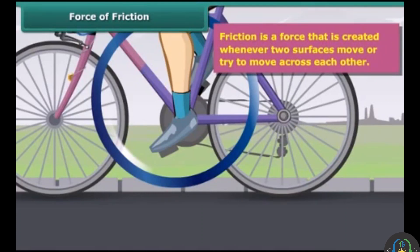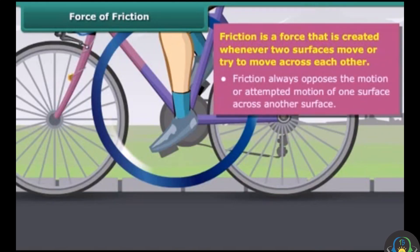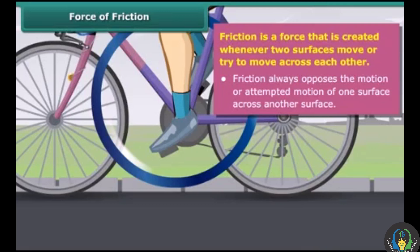This actually happens because of friction. Friction is a force that is created whenever two surfaces move or try to move across each other. Friction always opposes the motion or attempted motion of one surface across another surface, and this resists the motion of a body while moving on a surface.